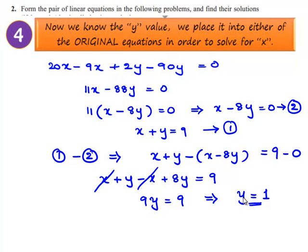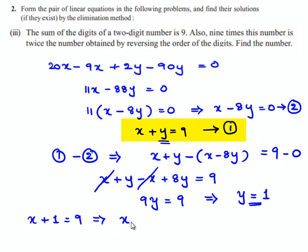So, the value of y is found to be 1. In order to obtain the value of x, let us substitute the value of y in equation 1. So, x plus 1 is equal to 9 which implies x is equal to 9 minus 1. That gives the value of x as 8.